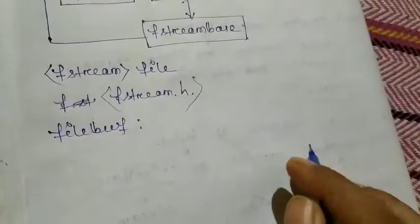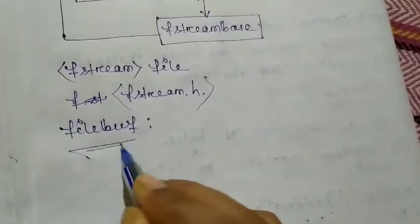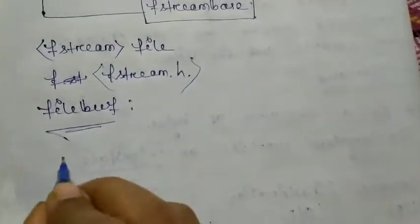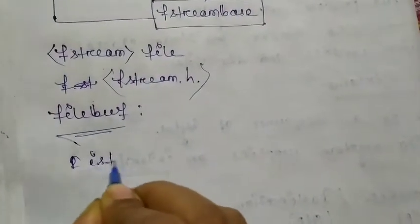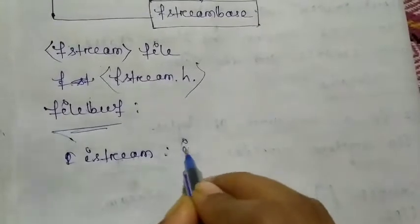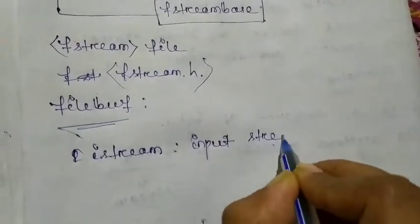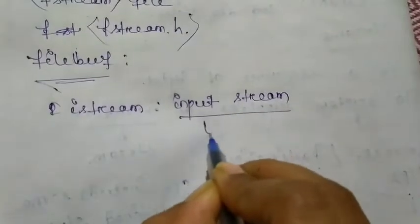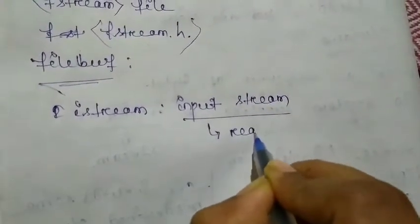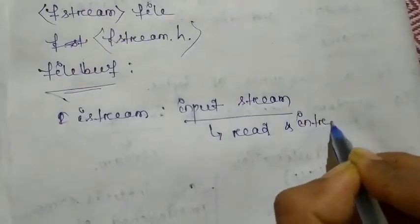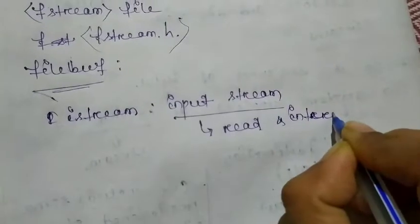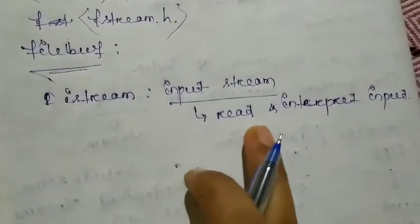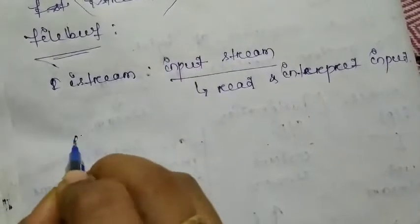Let's talk about different streams and their descriptions. First is istream — istream stands for input stream. Basically, this stream is used to read and interpret input.